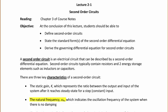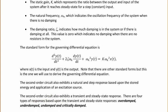The second characteristic is the natural frequency omega sub n, which indicates the oscillation frequency of the system when there is no damping. The third characteristic is the damping ratio zeta, which indicates how much damping is in the system, if there is damping at all.